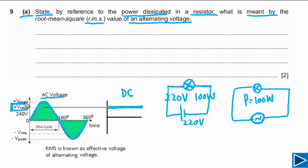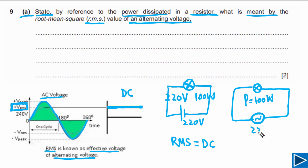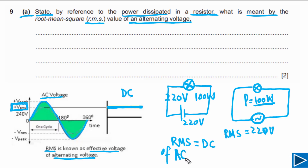The equivalent value of DC is equal to the RMS of AC. The RMS value is known as the effective voltage of an alternating voltage, and RMS is equal to DC. So if we supply an AC power supply with an RMS value of 220 volts, this light bulb will also dissipate 100 watts. The RMS value of AC is equal to the equivalent DC value.